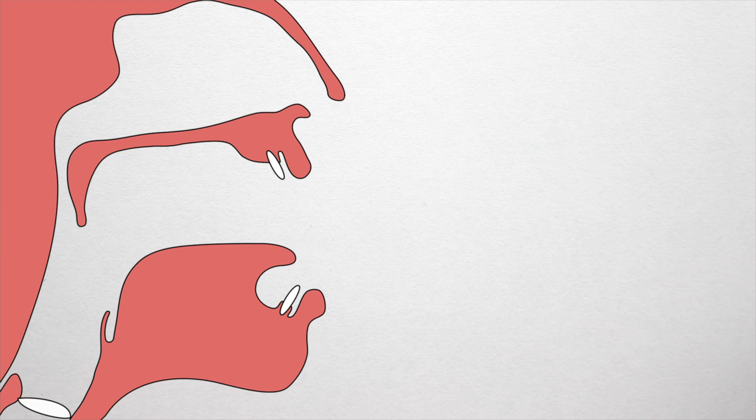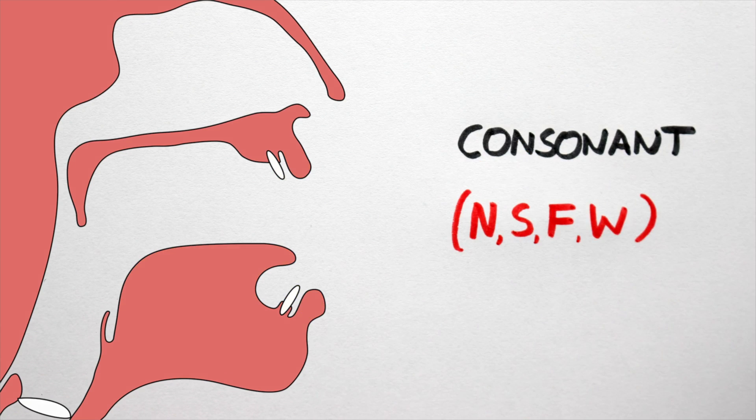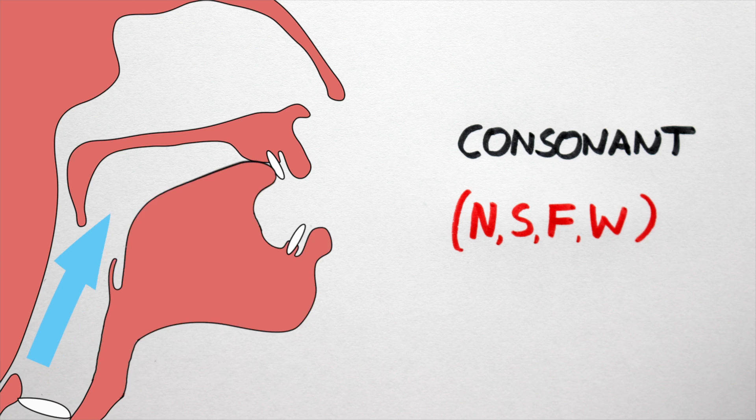This is the cross-section of the average human food hole, complete with lips, a tongue, and some teeth. A consonant is a speech sound produced when the airflow through the food hole, or vocal tract if you will, is to some degree obstructed.